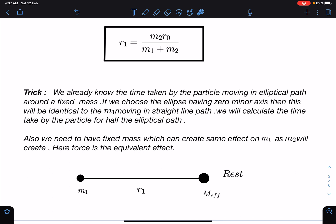We will calculate the time taken by the particle for half of the elliptical path. So if it is like this, from here to here, this will become t by 2, this will become t by 2.